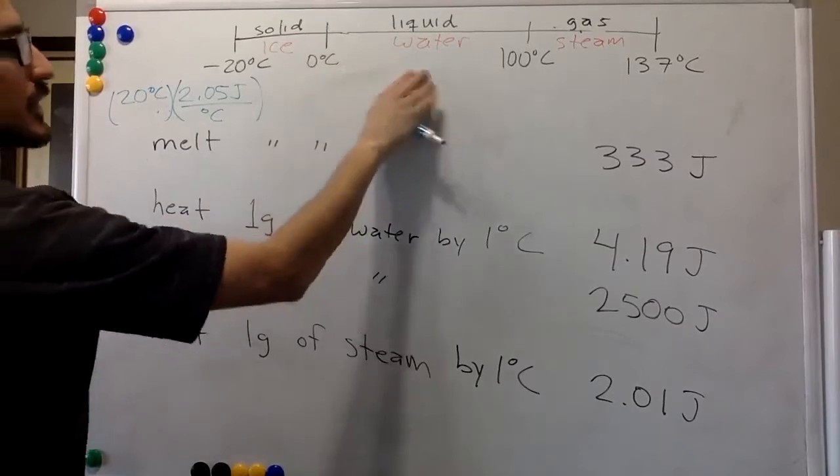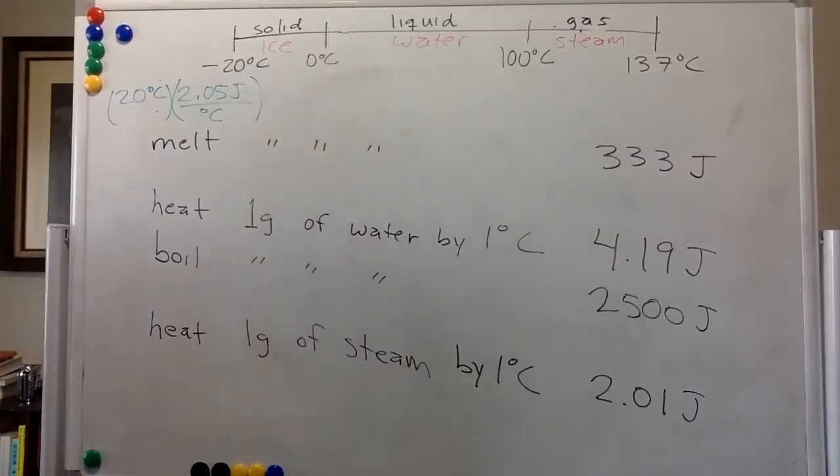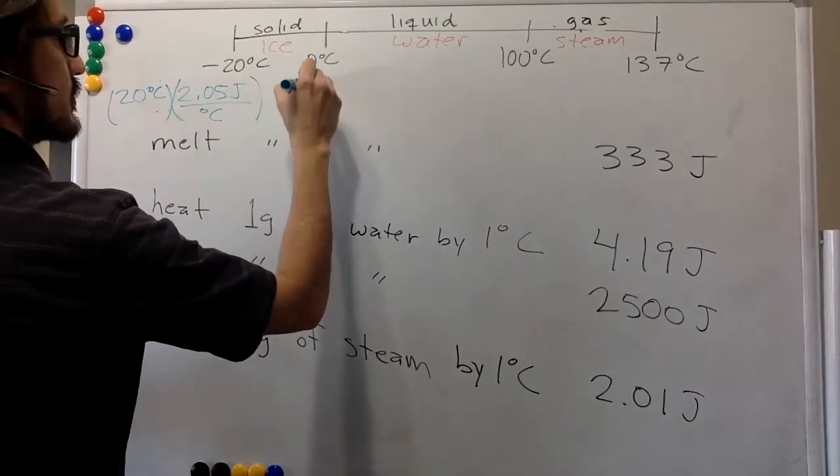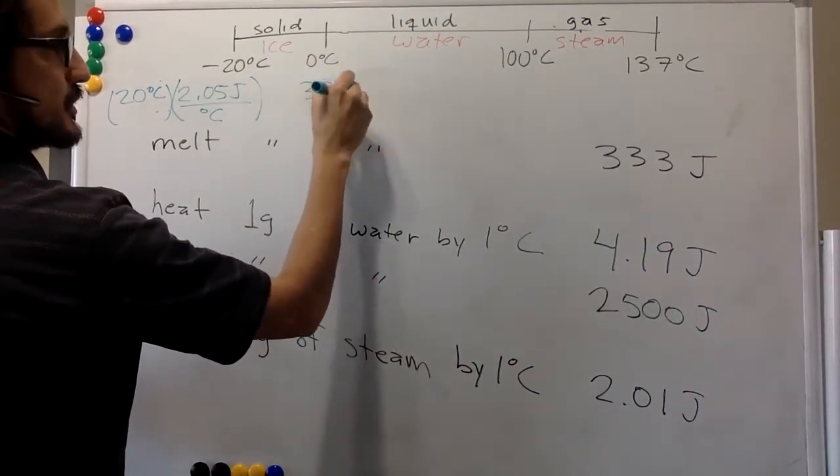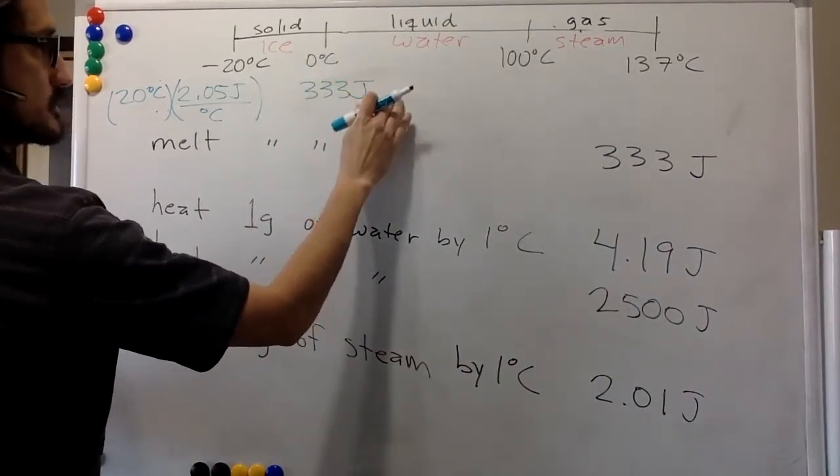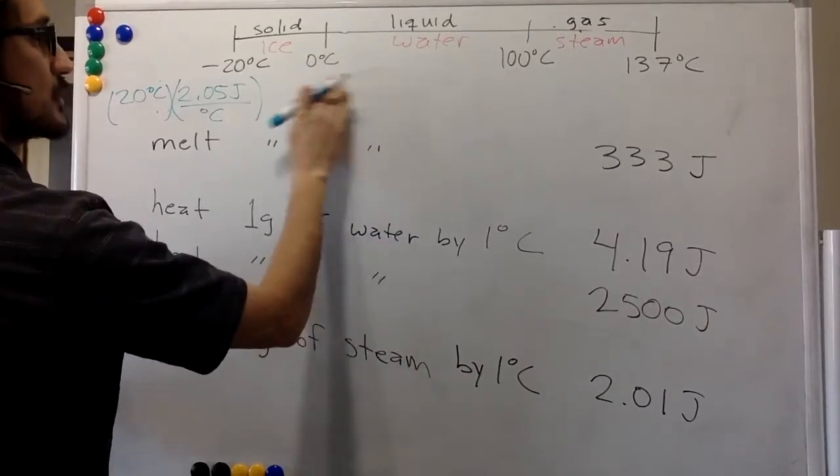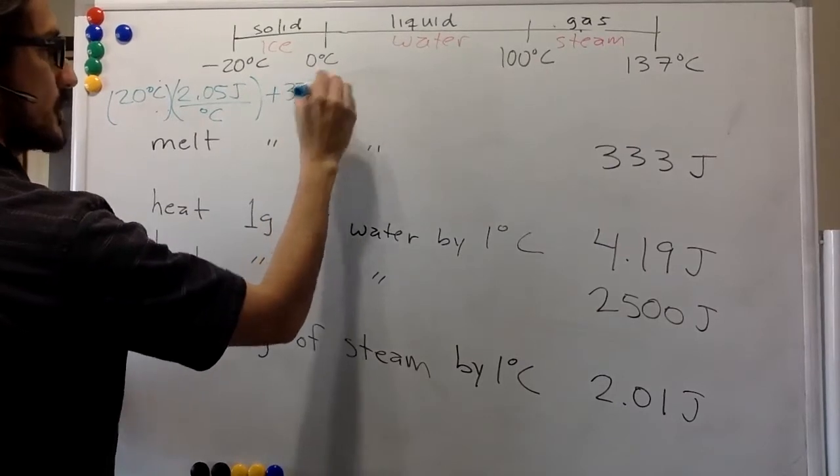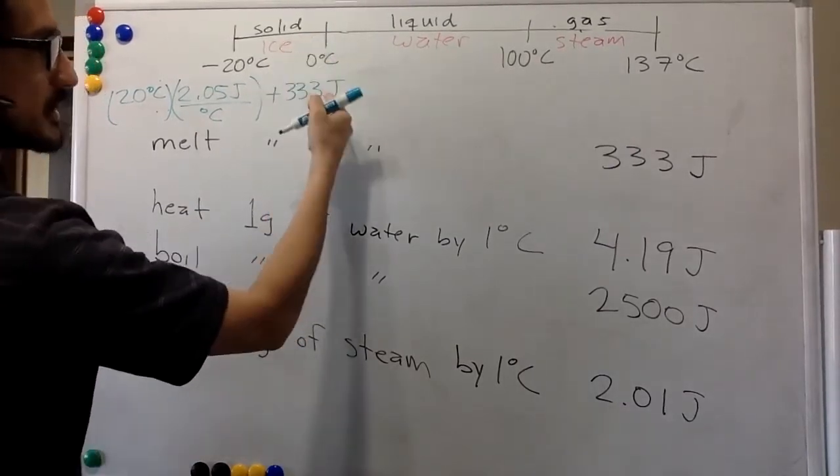So this is usually called the, I guess, heat of fusion. It's a latent heat. So it'll be just 333 joules. I'm going to put it over here, so plus 333 joules. You melt it.